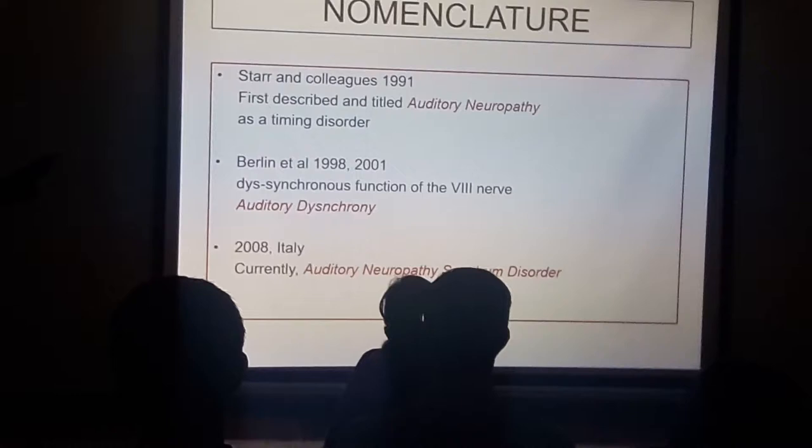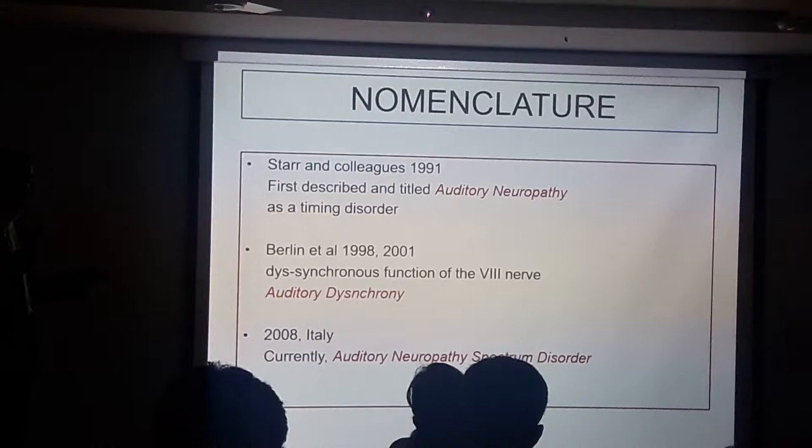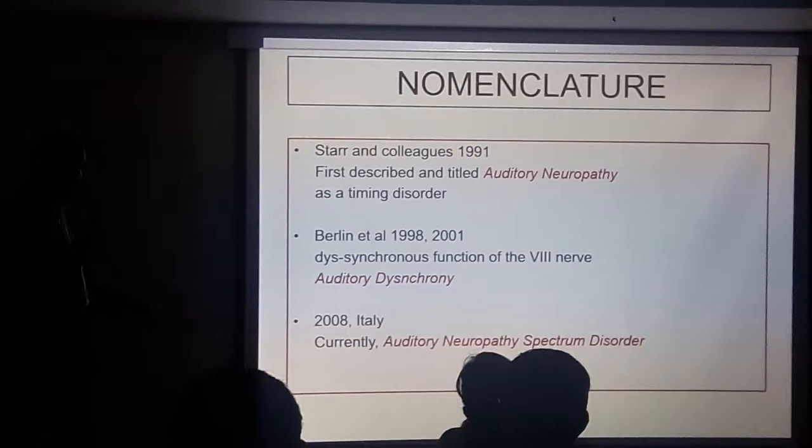So the earliest term 'auditory neuropathy' you might sometimes see called AD — auditory dyssynchrony. At 2008, there was a consensus statement where they combined all the concepts: auditory neuropathy and spectral disorder, basically called ANSD — Auditory Neuropathy Spectrum Disorder.